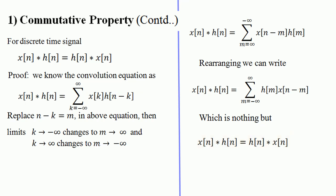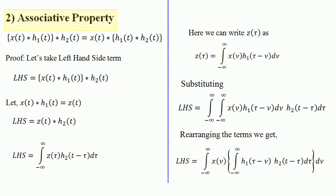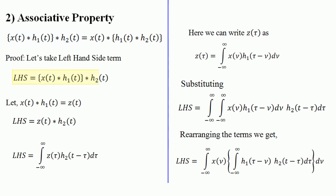The next property is the associative property. It states that [x(t) * h1(t)] * h2(t) = x(t) * [h1(t) * h2(t)]. Let's see the proof. Taking the left-hand side: LHS = [x(t) * h1(t)] * h2(t), where x(t) * h1(t) can be considered as z(t), so we have z(t) convolved with h2(t).